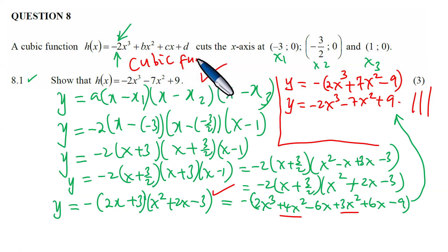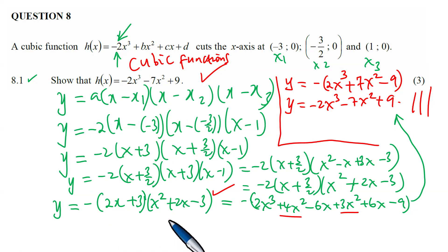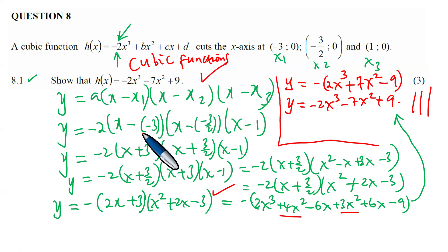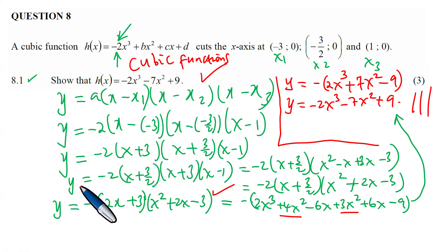Take note of the formula y = a(x − x₁)(x − x₂)(x − x₃) — it works as long as you have a cubic function and the x-intercepts are given. If x-intercepts are not given, other formulas and techniques are needed, which will be covered in later questions. The formula only works when the examiner provides the three x-intercepts.